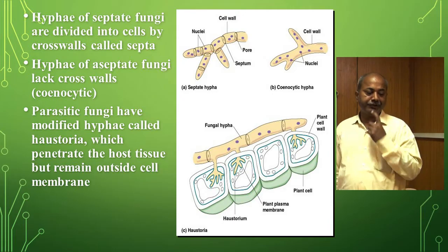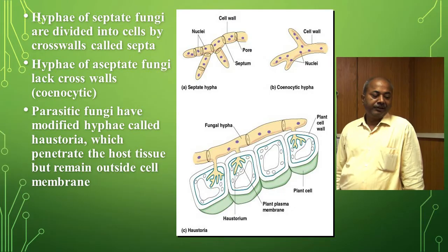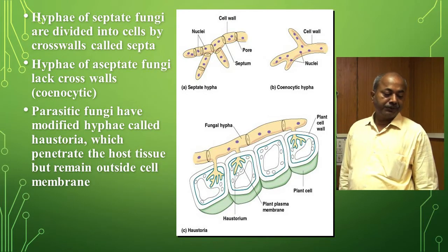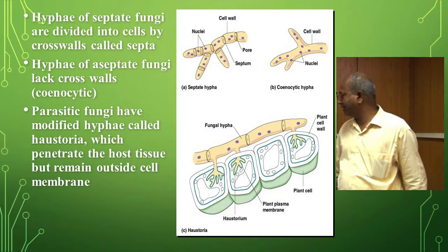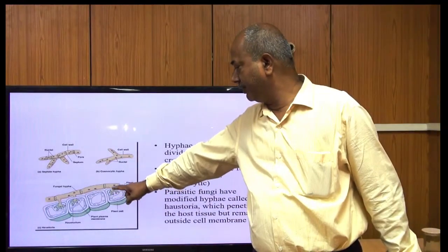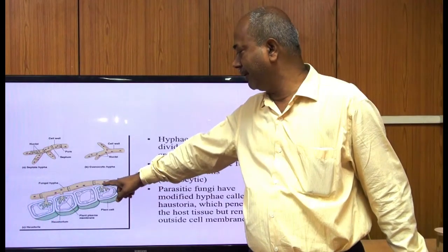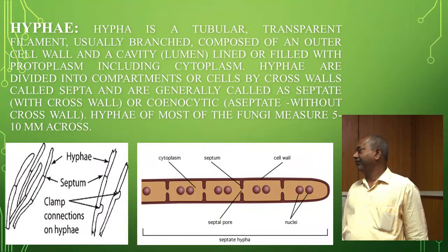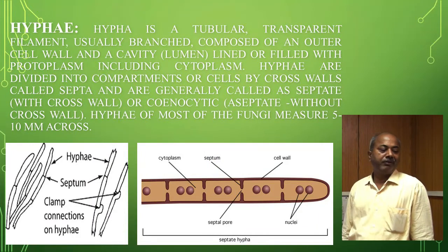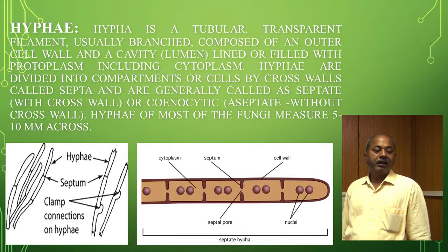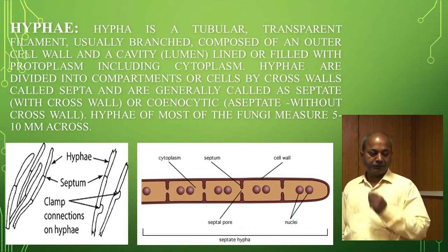Parasitic fungi have modified hyphae called haustoria, which penetrate the host tissue but remain outside the membrane. Hypha is a tubular transparent filament, usually branched, composed of an outer cell wall and a cavity lined or filled with protoplasm including the cytoplasm.